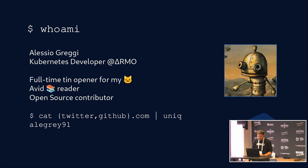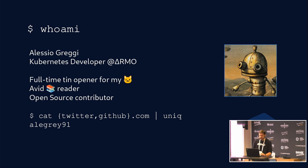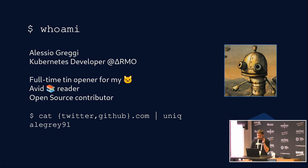My name is Alessio Greggi. I'm a Kubernetes developer at ARMO Security, a full-time tin opener for my cat, and an avid book reader. In my free time I also try to be an open source contributor. You can find me on GitHub and Twitter with the unique account 'alegre91'.